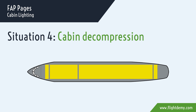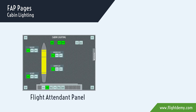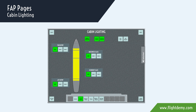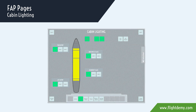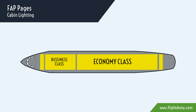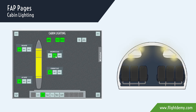The adjustment of the light intensity in the passenger area can be controlled with the cabin lighting page of the FAP and from the additional attendant panel. In the FAP, the lighting cabin page shows a cabin with each section illuminated according to the selection. Each airline selects the cabin layout according to its configuration. In this case, the cabin has two zones — business and economy class — and two entry sections.